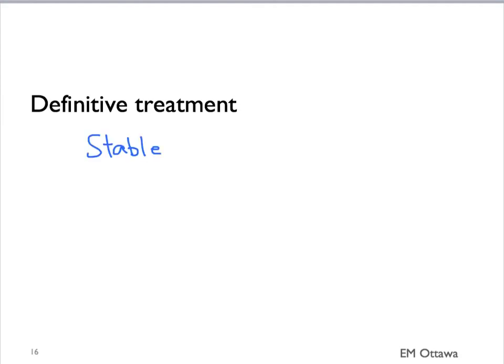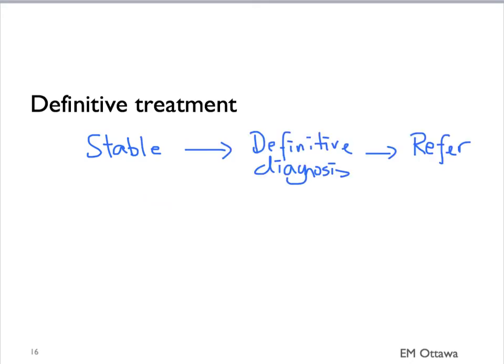Our goal in the emergency department is to get the patient to definitive treatment by surgeons as soon as we can. In a stable patient, we can often wait until after a definitive diagnosis is done through imaging before referring the patient. However, in the unstable patient, we may not have time to come up with a definitive diagnosis. In those patients, we like to refer early and will work together with the surgical team to come up with what we think is the most likely diagnosis.